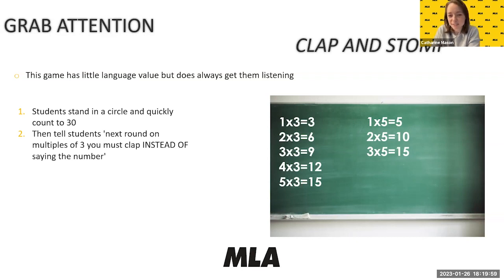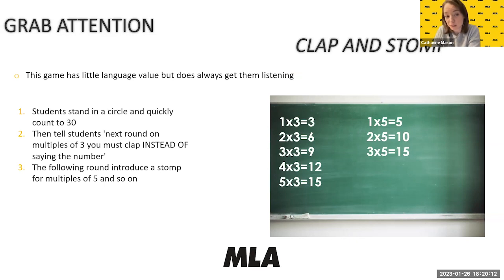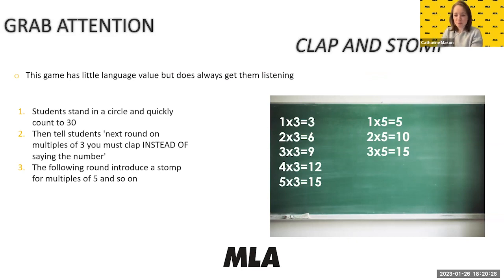Once they've successfully done it with the three times table, you introduce the five times table. Every time a multiple of five comes up, they have to stomp instead of saying the number. It gets confusing when a number is a multiple of both three and five — then they have to stomp and clap at the same time.